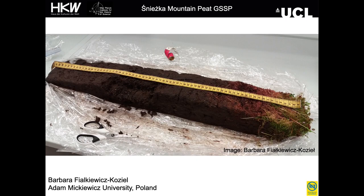Slightly larger and providing plenty of material for stratigraphic analysis is this ombrotrophic peat sequence volunteered by Barbara Fialkiewicz-Kozyl and her team at Adam Mickiewicz University in Poland. The core is from Snezka mountain in the Sudeten mountain range that straddles the Czech Republic, Poland and Germany. The peat monolith shown here — about 70 centimetres in length — was collected in August 2020. Previous work from the location has shown that peat has captured atmospheric contaminants blown in from around Europe, and we see very distinctly the input of metals and other markers of fossil fuel combustion in the mid-20th century. The peat sequence has also been very effective at capturing global plutonium and other radioisotopes.